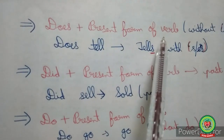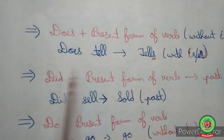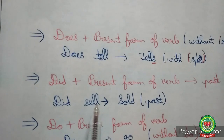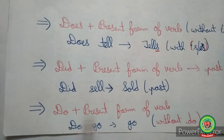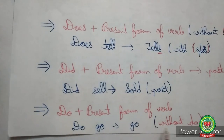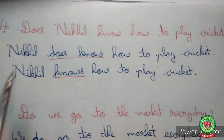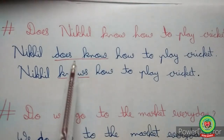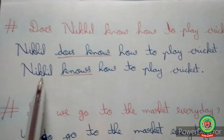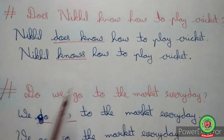Students, always remember: whenever 'does' plus the present form of a verb is given, like 'does tell,' it will be changed to 'tells' with an 's.' Whenever 'did' plus the present form is given, like 'did sell,' it will be changed to the past form 'sold.' Whenever 'do' plus the present form is given, like 'do go,' it stays as 'go.' So 'does know' becomes 'knows,' 'does' is removed, and the statement is: 'Nikhil knows how to play cricket.'